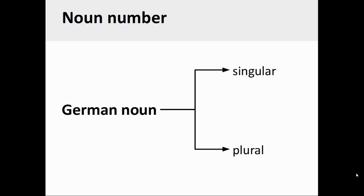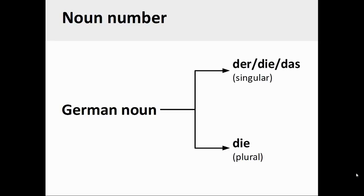As in English, German nouns can also be singular or plural. However, plural German nouns, unlike German singular nouns, do not manifest any gender, and their definite article is always die.